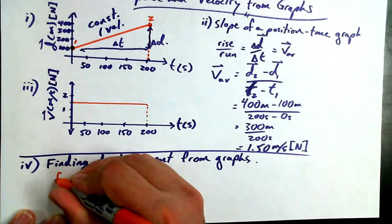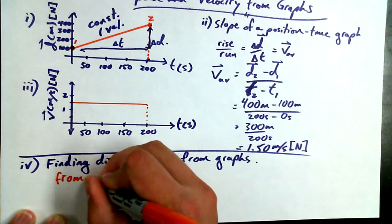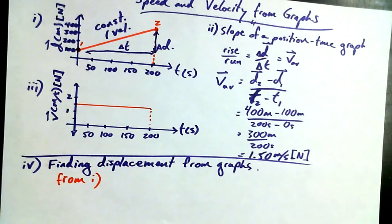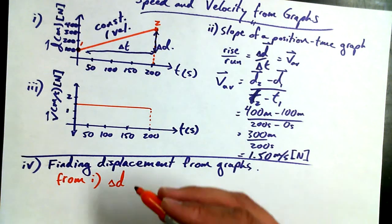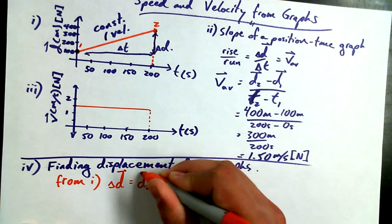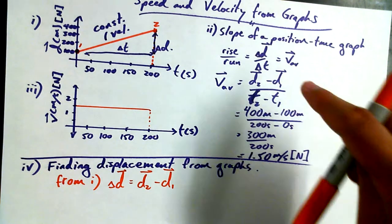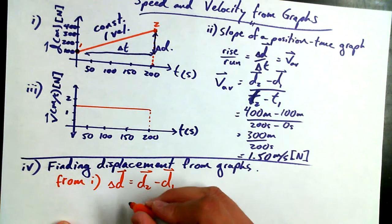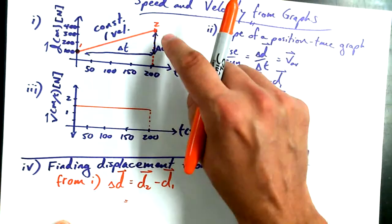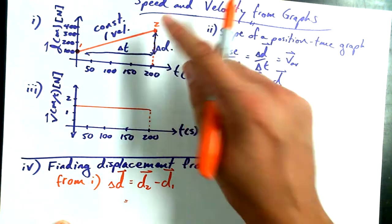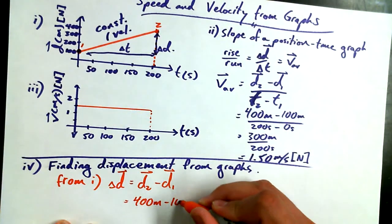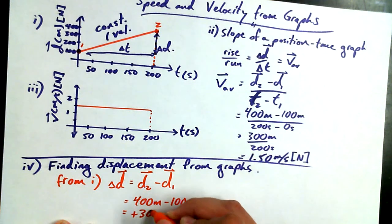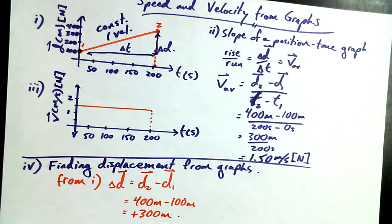First I want to talk about finding displacement from graph I. Finding displacement for this journey from graph I would just be delta D equals D2 minus D1. We actually already did it up here embedded within that average velocity calculation. So we could find our delta D value, our displacement, by just saying delta D is D2 minus D1. D2 is 400 meters, D1 is 100 meters. And I ended up getting positive 300 meters. I moved 300 meters in the positive direction or 300 meters north.